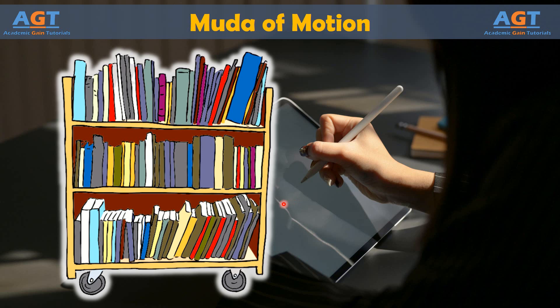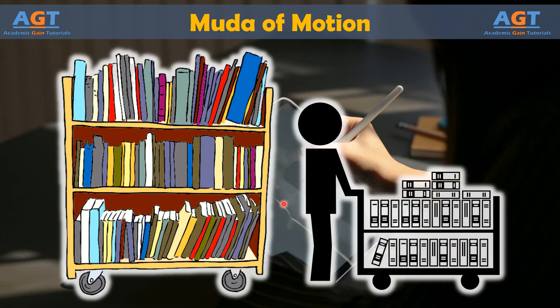Public libraries have long employed a simple tool to avoid muda of motion in the reshelving process. Books are first ordered on a cart. The cart allows an employee to carry many books without moving back and forth, and placing the books in order on the cart lets the individual move through the stacks once.